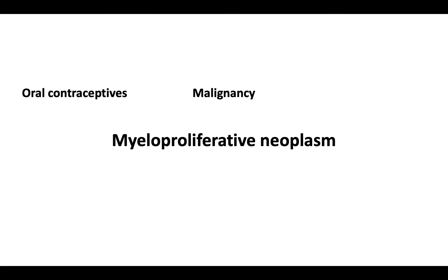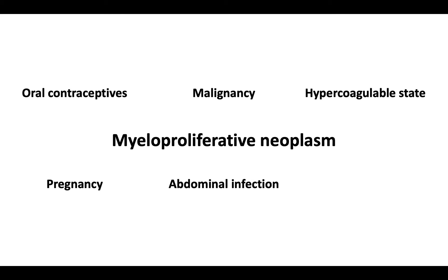Let's briefly discuss etiology. Most cases of Budd-Chiari syndrome are due to an underlying myeloproliferative neoplasm. To this end, the finding of Budd-Chiari syndrome should warrant JAK2 mutation testing. Other less common causes include malignancy, oral contraceptive use or pregnancy, a hypercoagulable state, the presence of abdominal infection, and a rheumatologic disorder such as Behçet syndrome.